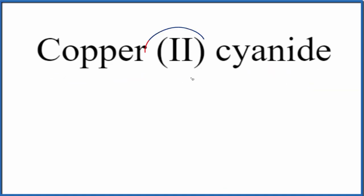So the first thing we note is we have this Roman numeral 2. That means that copper is a transition metal, so we're going to have to think about its ionic charge.